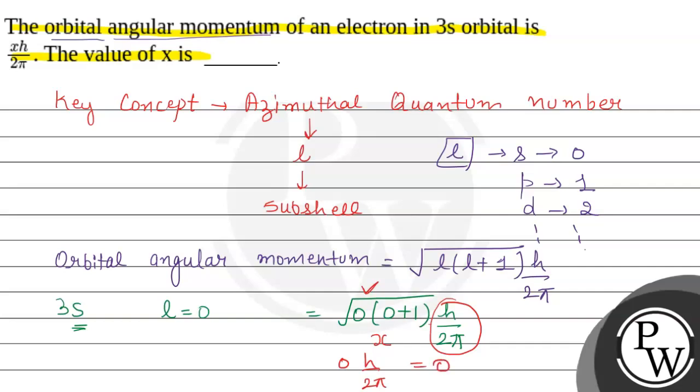But we were asked the value of x. So this x value will be 0. The answer of this question will be 0. Hope you understood it well. Best of luck. Thank you.